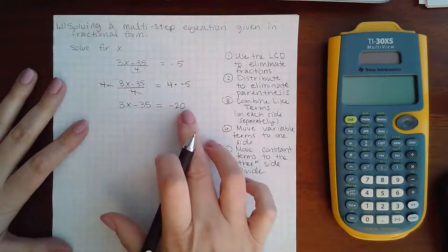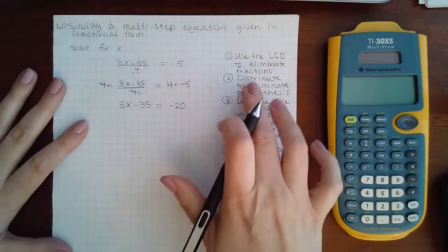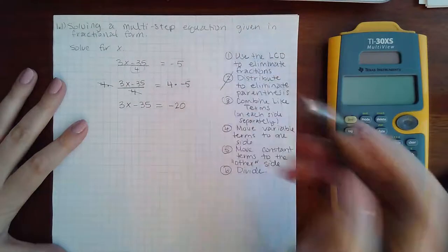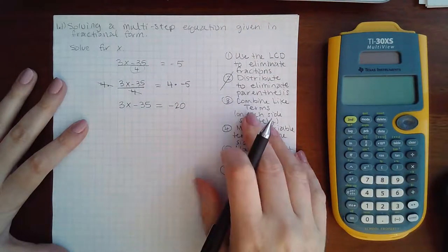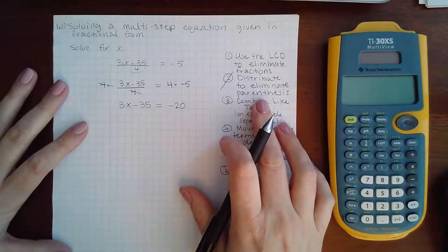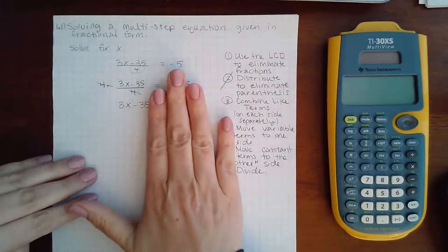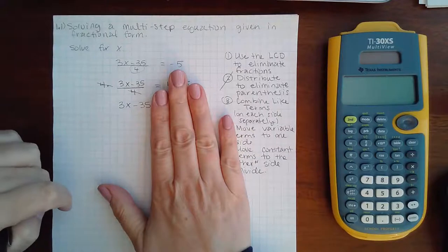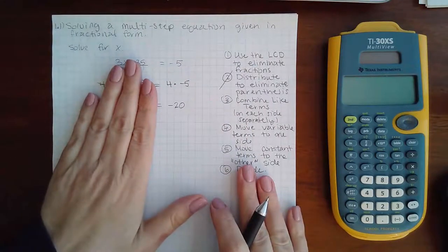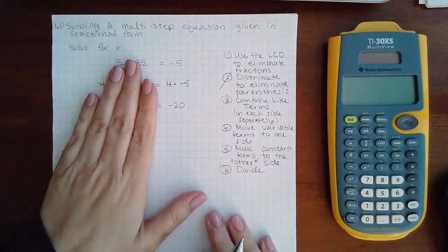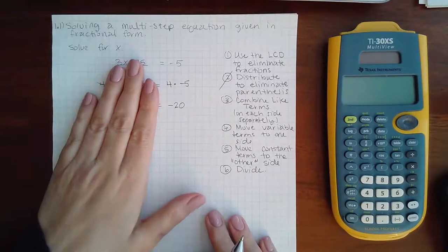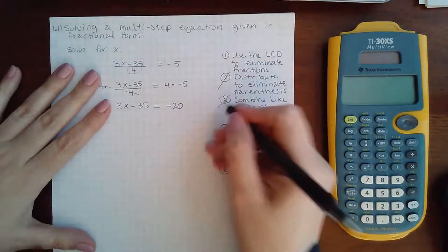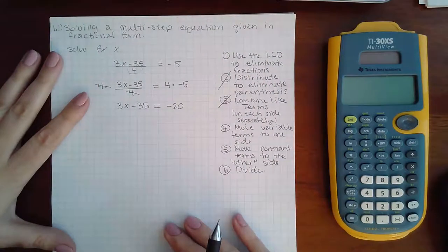There are no parentheses here, so I don't need to do step two, which is distribute. Step three is to combine like terms on each side separately. So if I cover one side, these two are not like terms, so they cannot be combined. If I cover the other side, it's only one term, so there's nothing it can be combined with, which means I don't have step three in this particular problem.